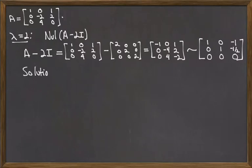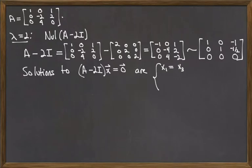From here, we can read off the solutions to the equation A minus 2 times I times x is equal to 0. The solutions are x1 equal to x3. Looking at the first equation here, here's the third variable. x2 is equal to 1 half times x3. And because we're missing a pivot in the third column, x3 is free.